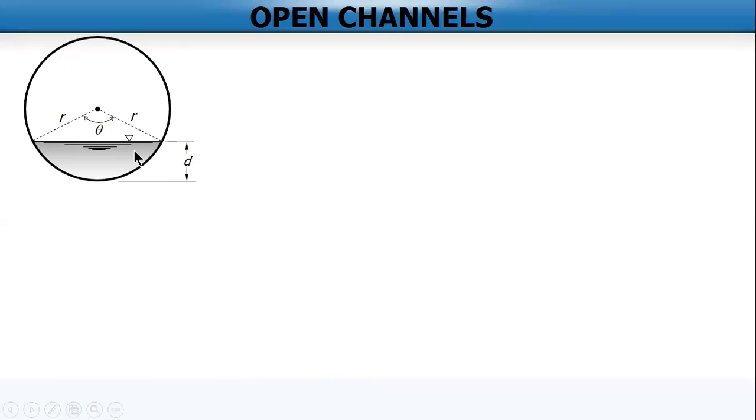Now, there are two unknowns here: d and theta. But for circular pipes or circular channels, it's easier if theta is what we solve first. And then once we get the value of theta, we can easily solve for d. So the area of the segment in terms of theta is area of sector minus area of triangle.